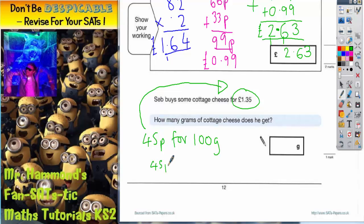If he spends an extra 45p, that's going to be 90p, which gives him 200 grams. If he spends an extra 45p on top of 90p, that's actually going to make it £1.35.